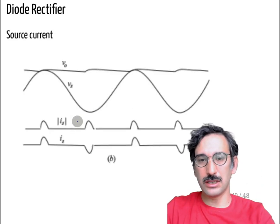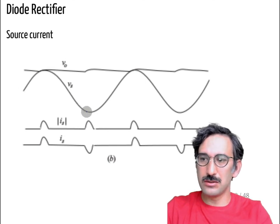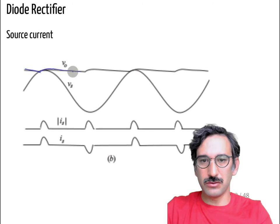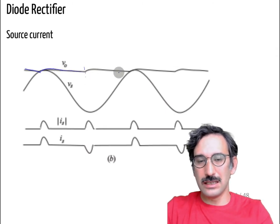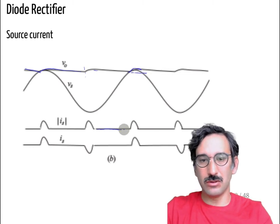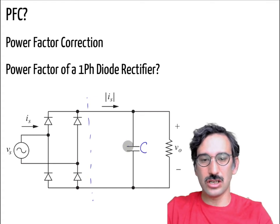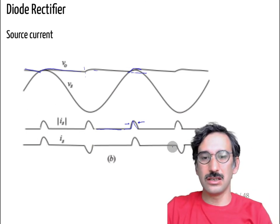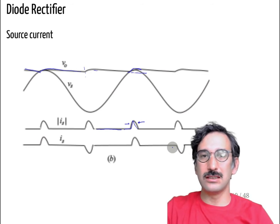Let's have a look at the waveforms. This is your source voltage and this is your capacitor voltage. Whenever your capacitor voltage is slowly decaying depending on your load, whenever it is less than the source voltage you are not drawing any current — this is your source current. Whenever your voltage tries to climb over that capacitor voltage, it draws a really short period of current, and during that time the current charges the capacitor. So at the end of the day, instead of a nice sinusoidal current you have a really peaky input current.